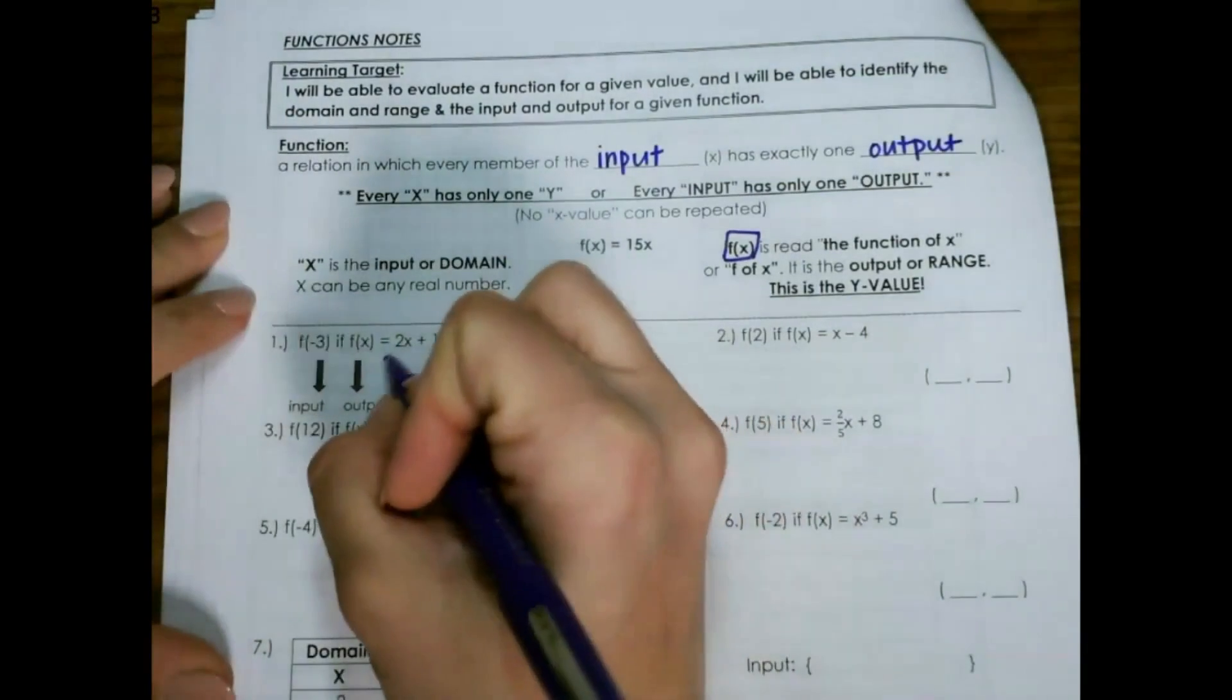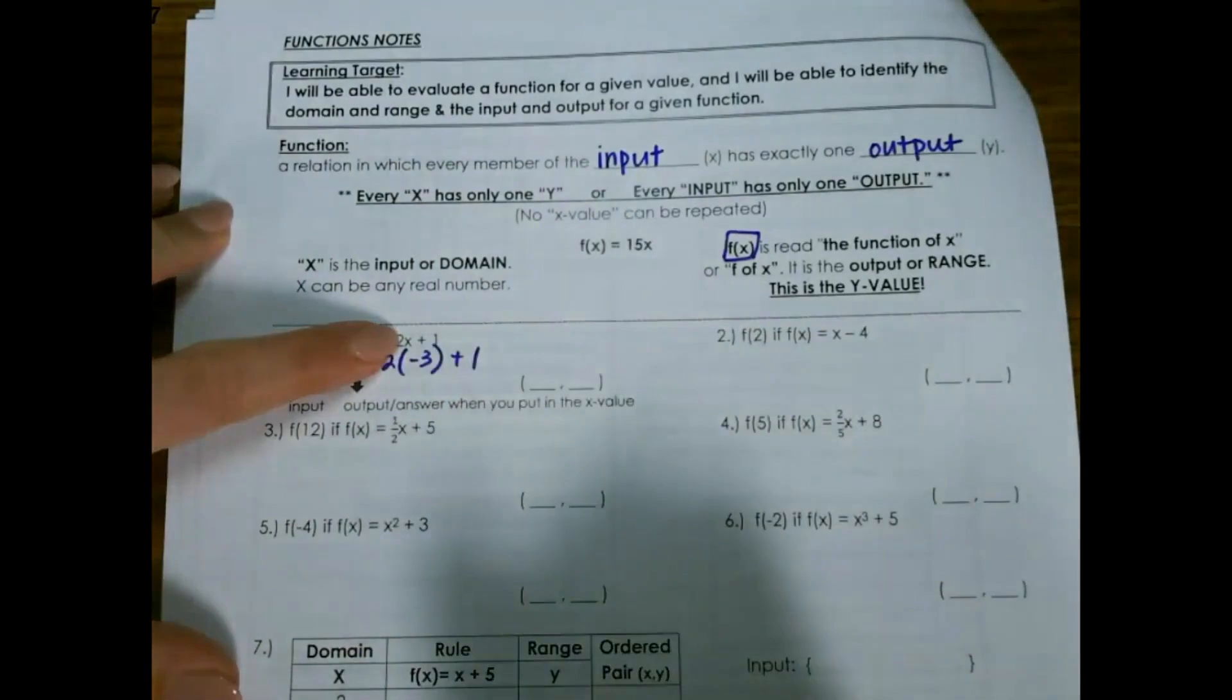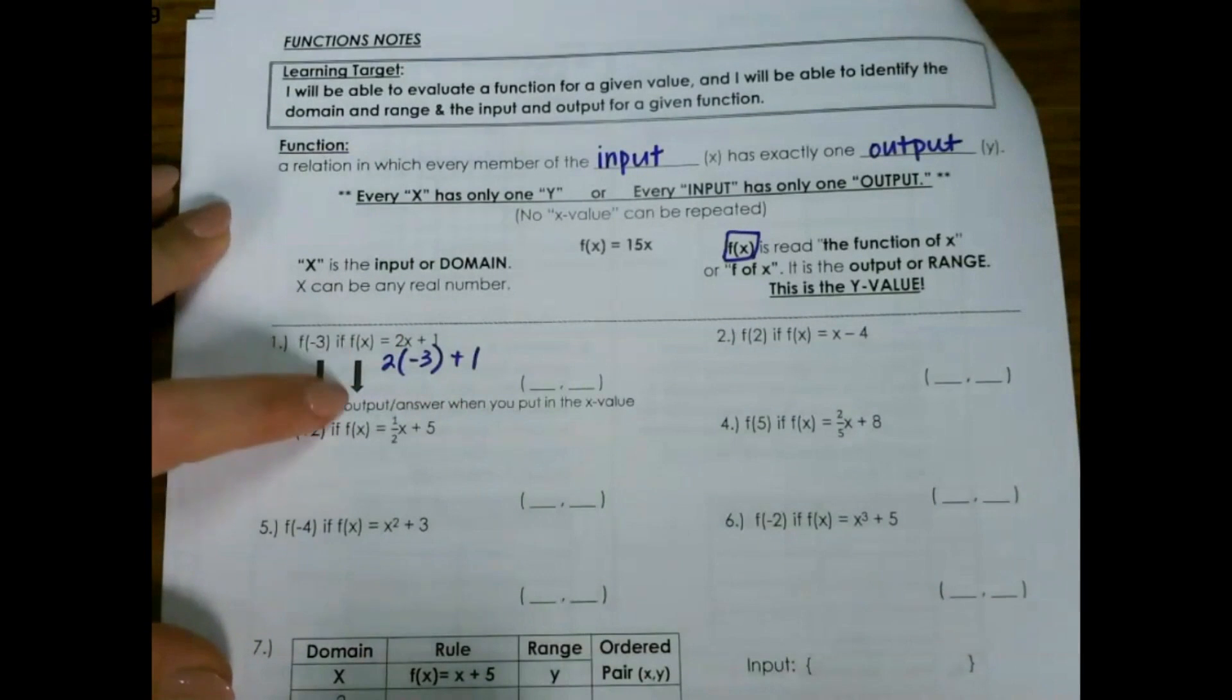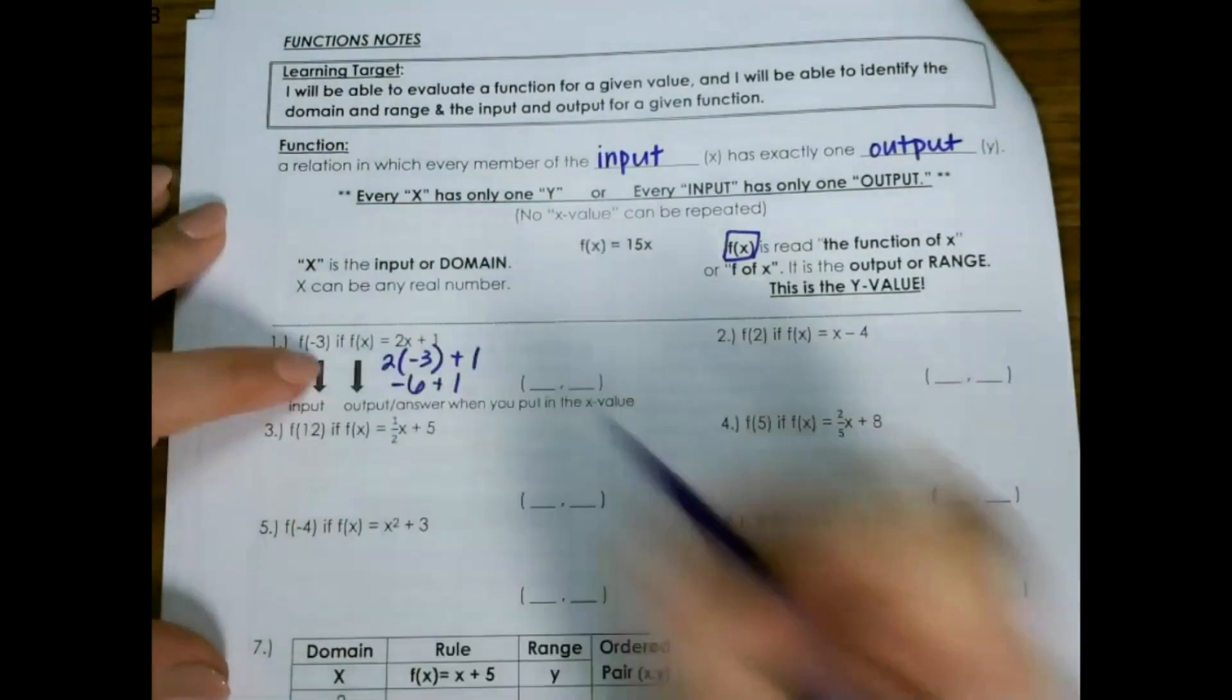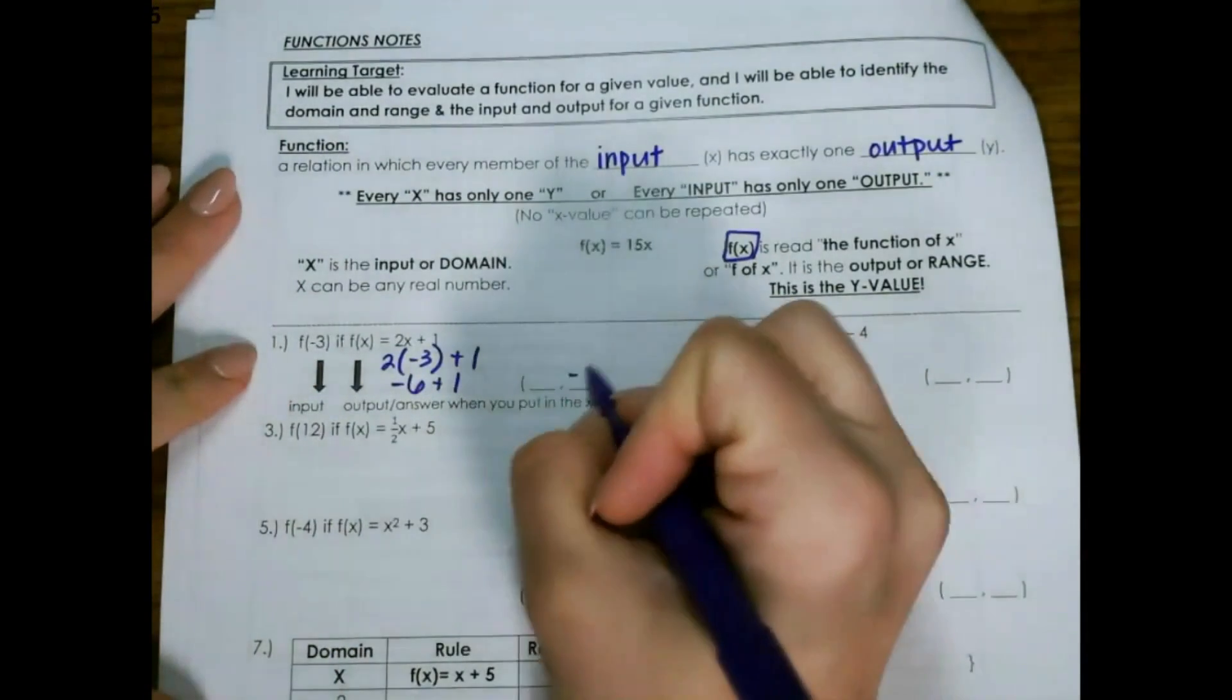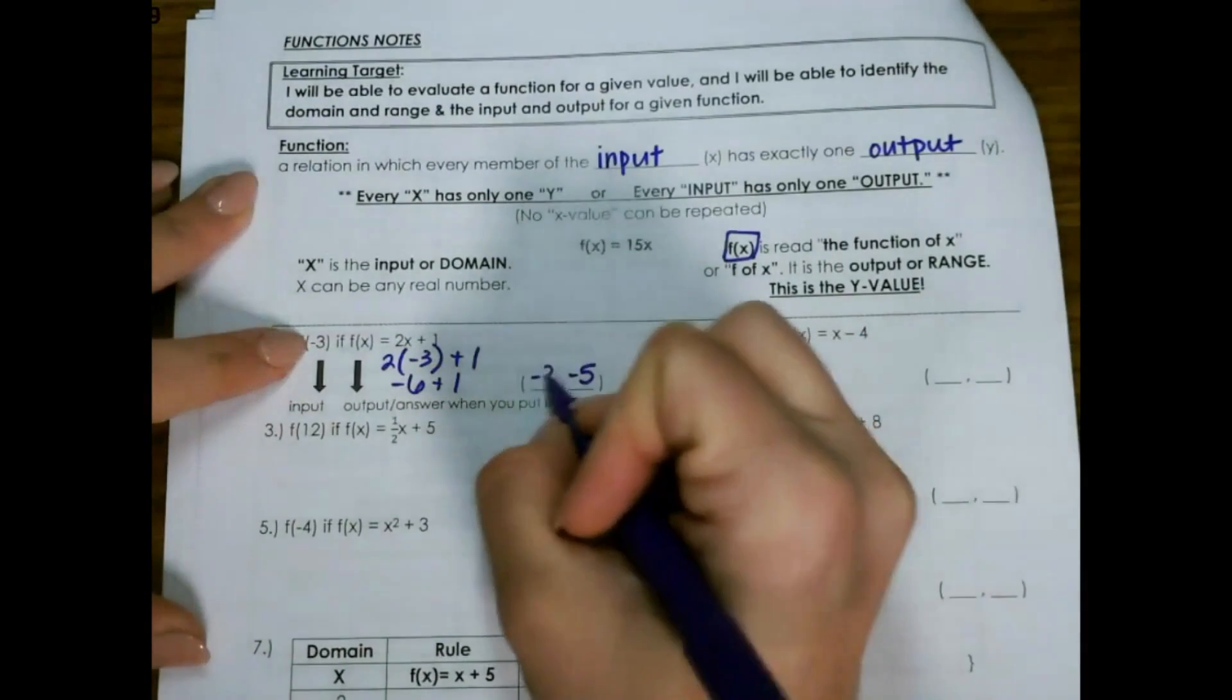So I'm just going to simply substitute in negative 3 in place of x, and that's going to give me my f of x value, or output. So 2 times negative 3 is negative 6, plus 1 is negative 5. So that's your y value, and your x value is negative 3.